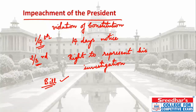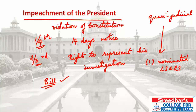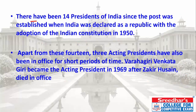If both houses pass the bill with a two-thirds majority, the President is removed from that day. Impeachment is not a judicial process but a quasi-judicial one. Two important points: nominated members of the houses do not participate in the impeachment process, though they do participate in the presidential election. Similarly, elected members of Delhi and Pondicherry participate in the presidential election but not in the impeachment process.